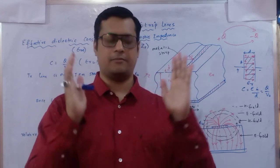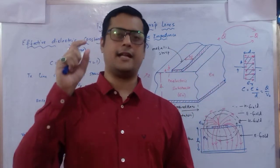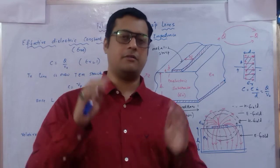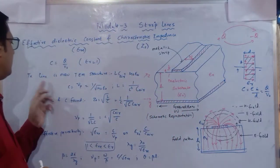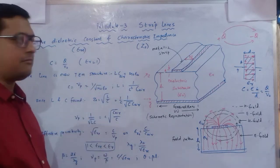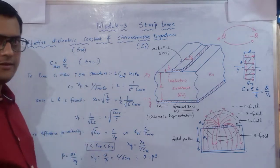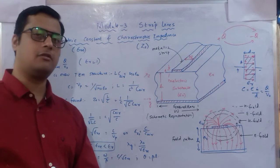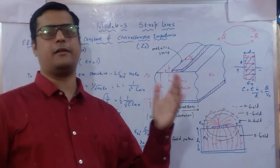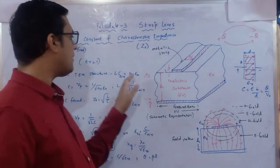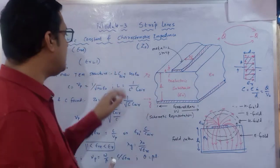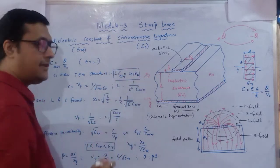L × C = μ × ε means it acts like a resonating LC circuit. For this transmission line in TEM structure, L × C_air = μ₀ × ε₀, where C_air is the air medium capacitance. Multiplying μ₀ and ε₀ gives 1/c², where c is the speed of light at which the wave propagates. This is the first condition.